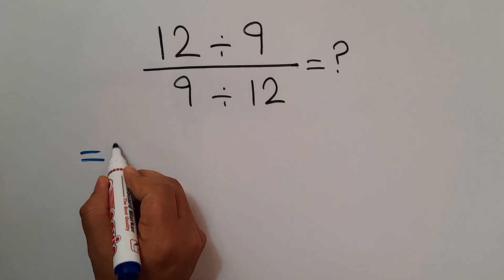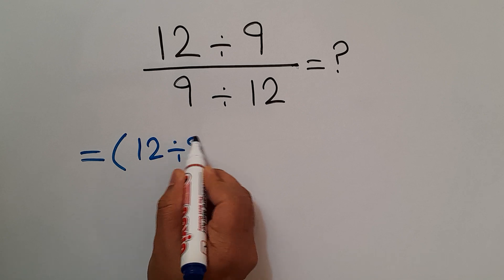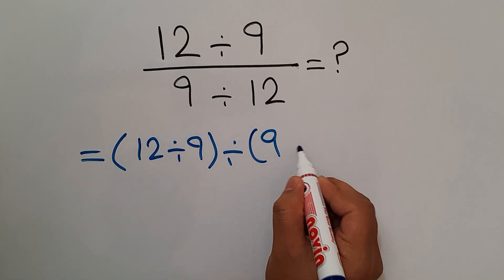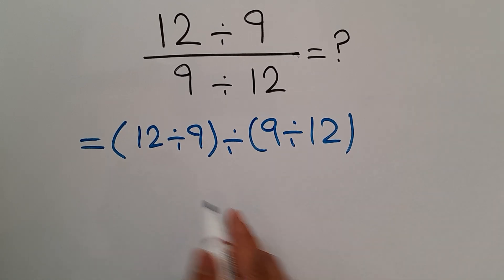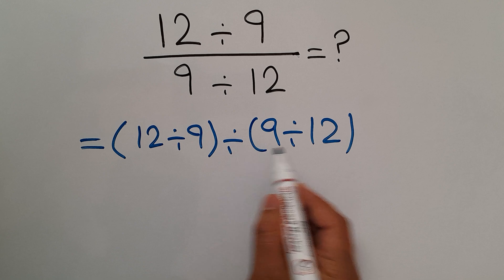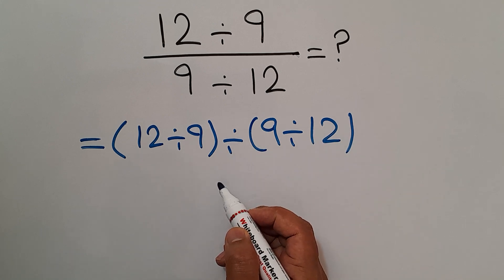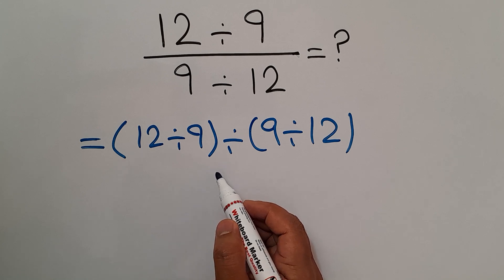Instead of this fraction, we can write parentheses: the numerator 12 divided by 9, divided by the denominator 9 divided by 12. Now we have the parentheses and this division. As we know, parentheses has higher priority than other operations.